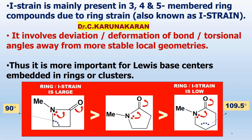What is called I-strain? It occurs mainly in three-member and four-member ring compounds due to ring size. As seen here, this is a four-member ring, this is a four-member ring, this is a four-member ring, this is a five-member ring, and this is a six-member ring compound — a Lewis base. You have already studied Baeyer strain theory. The bond angle in this case is 90 degrees, so there will be strain due to ring size, while here there is no strain. Ring strain causes I-strain, or internal strain.